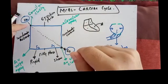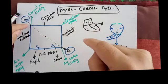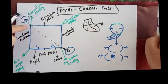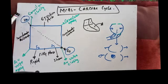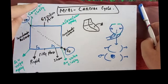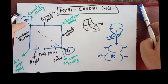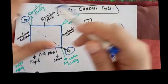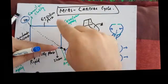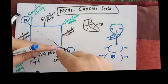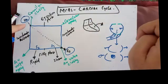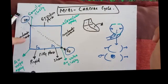S2 is produced during the ejection phase — specifically at the end of the ejection phase, or at the start of isovolumetric relaxation. S2 is due to closure of the semilunar valves — the aortic and pulmonic valves — which close at the end of ejection or start of relaxation. So S2 is at the start of isovolumetric relaxation.